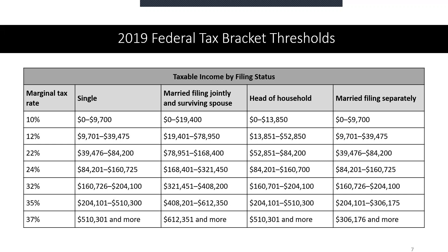This chart also includes married, head of household, and married filing separately, so you can refer to it to find your specifics. One of the most common questions I get is 'what is my tax bracket?' — and I can't answer that for you because it depends on your income, whether you're married, your spouse's income, and how you file. This chart is useful, and keep in mind it covers your federal tax bracket — on top of that, there are also state taxes to consider.